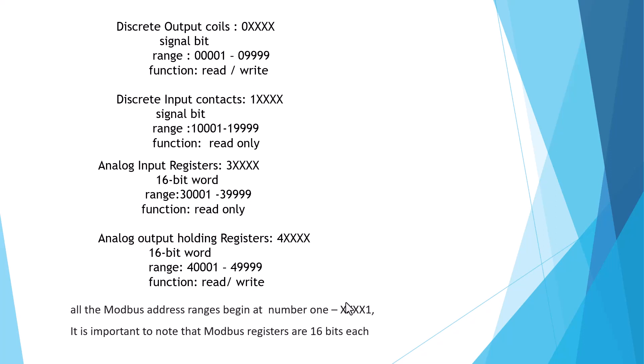Discrete output coil memory starts at zero. We use a four-digit number — it is single bit, ranging from 0001 to 09999. The function is read and write. Discrete input contact is a digital input only. Its memory starts at one, also a four-digit single bit number, ranging from 10001 to 19999. The function is read only — you cannot write.